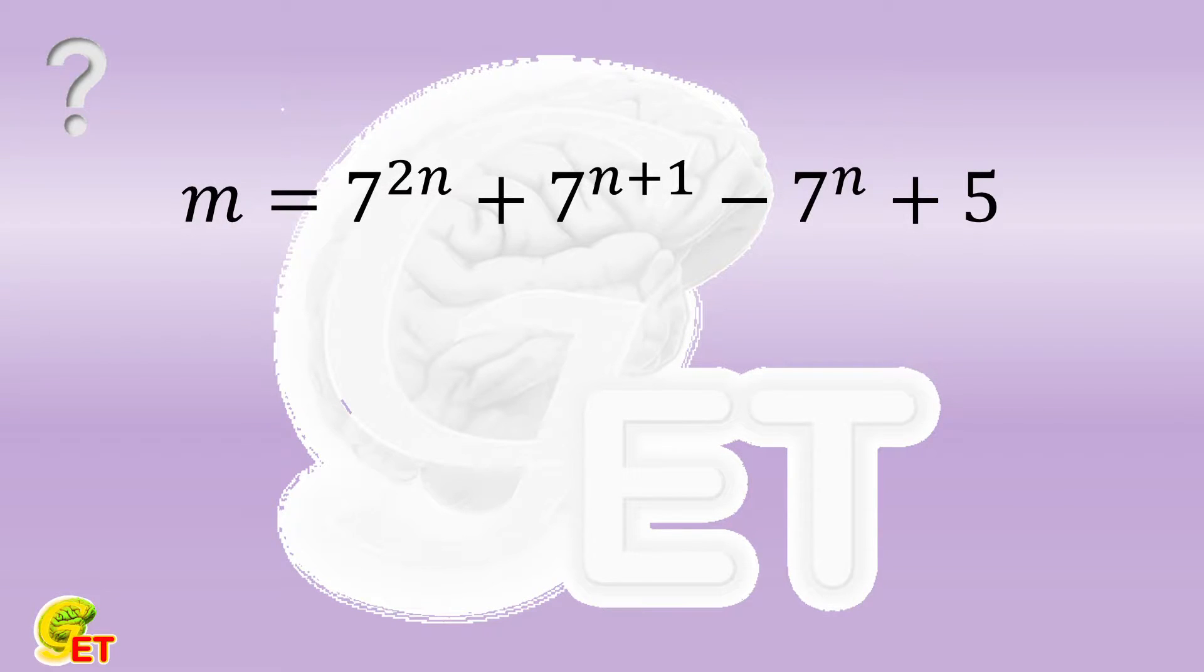m is equal to 7 to the power of twice n plus 7 to the power of n plus 1 minus 7 to the power of n plus 5.